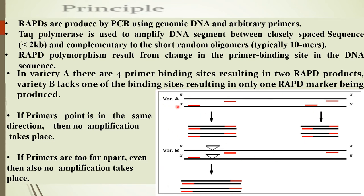In this picture, variety A has four primer binding sites, resulting in multiple RAPD products. Whereas variety B lacks one primer binding site, resulting in only one RAPD marker being produced. If the primers point in the same direction, no amplification takes place. Even if the primers are too far apart, no amplification takes place either.